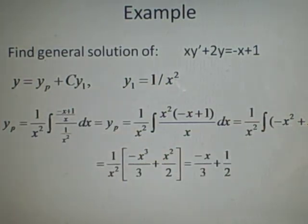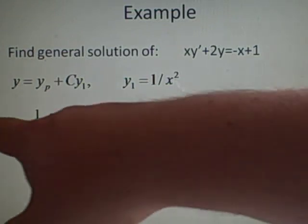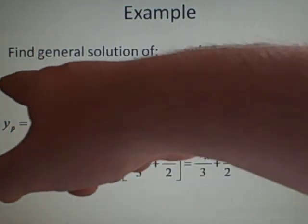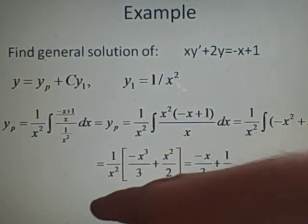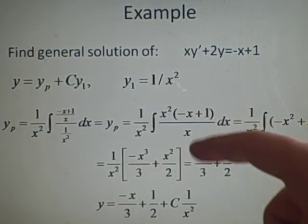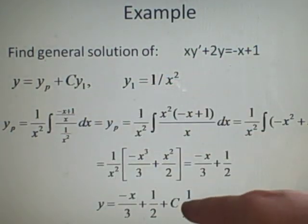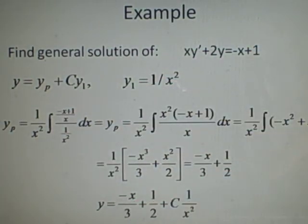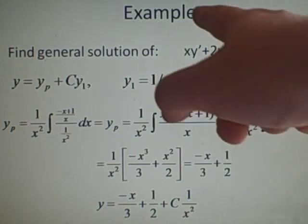Now, we can start cancelling. So, we get minus x over 3 plus 1 half, and that is our particular solution, the y of p. Now, what we've got to do is we've got to add them together. So, y equals this one plus this one, times c, obviously. So, it's minus x over 3 plus 1 half plus c times 1 over x squared.